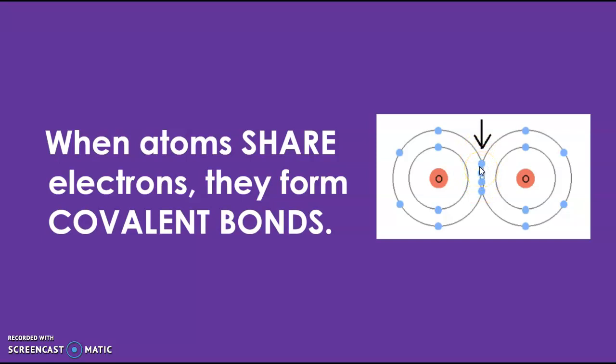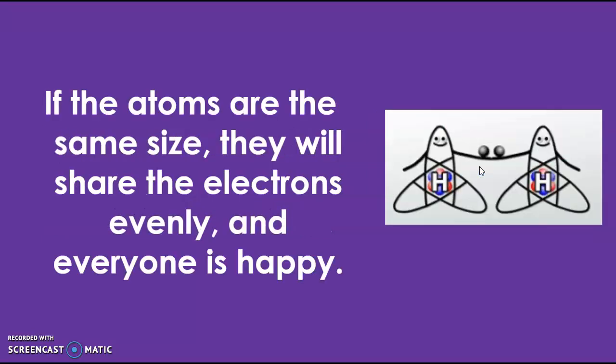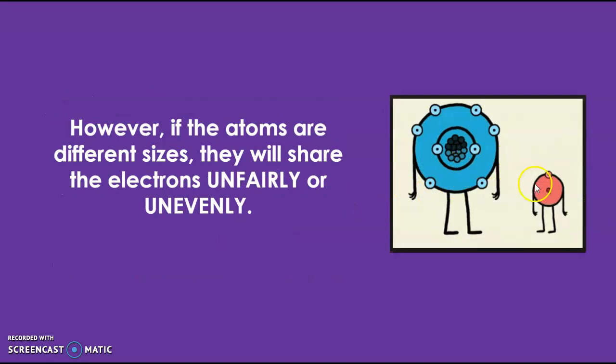We've already tackled that when we're sharing electrons, it's forming a covalent bond and that's a strong bond. However, if atoms are the same size, they share those electrons evenly; everybody's happy and those electrons spend the same amount of time around both atoms.